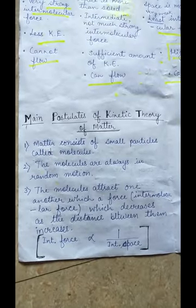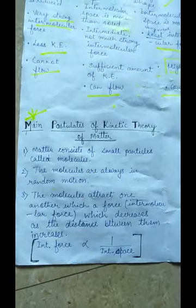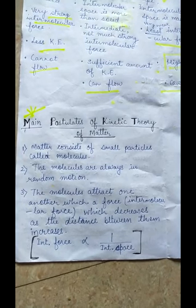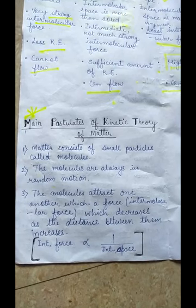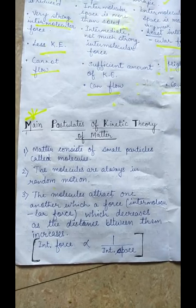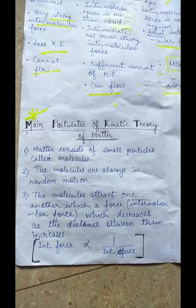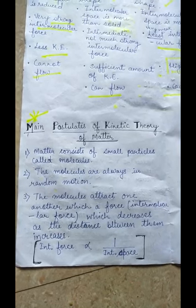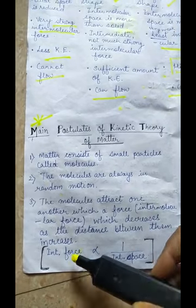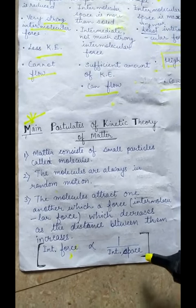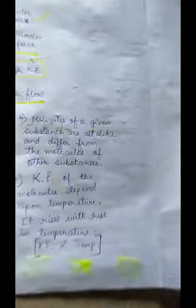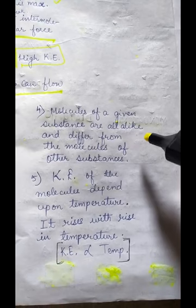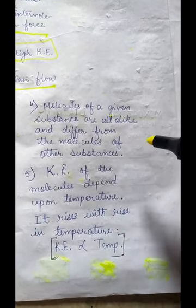Now, what are the main postulates of the kinetic theory of matter? First: matter consists of small particles called molecules. Second: the molecules are always in random motion. Third: the molecules attract one another with a force — the intermolecular force — which decreases as the distance between them increases, meaning intermolecular force is inversely proportional to intermolecular space.